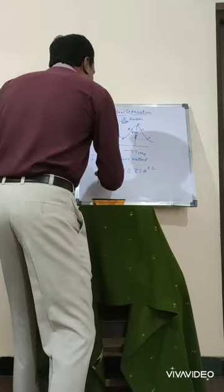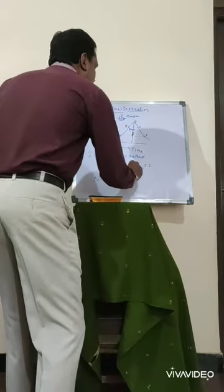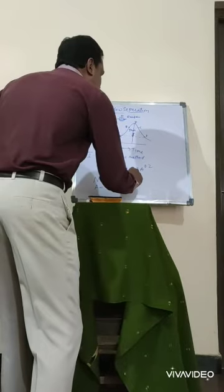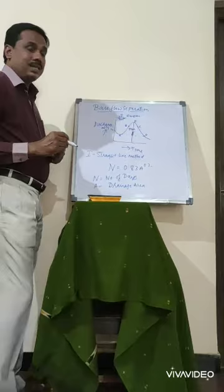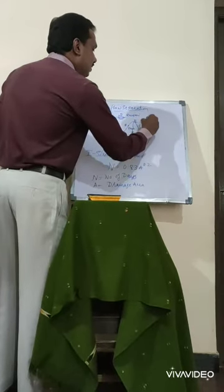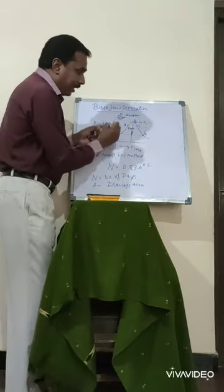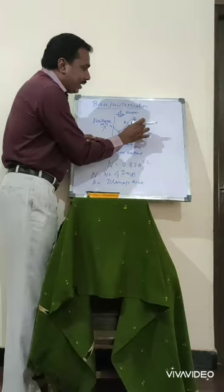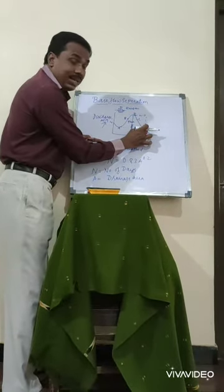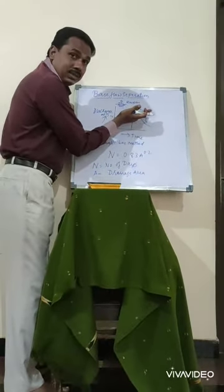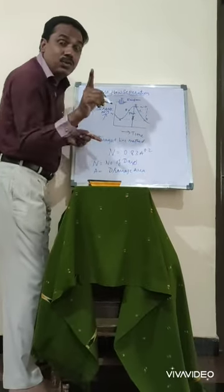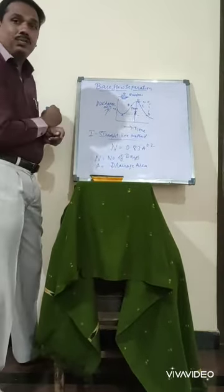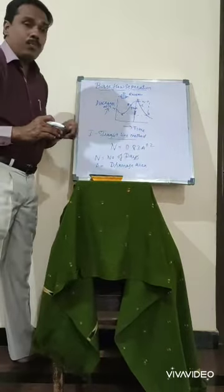What is N here? N is the number of days. What is A? A is nothing but the drainage area. When the rainfall occurs, automatically there will be a deflection, after which there will be a rise. When the peak occurs, we consider how many days it will take to deflect and make clear the surface runoff — the remaining would be called as the base flow. I am drawing a line from A to D — that is the straight line method, denoted by N = 0.83 × A to the power of 0.2.